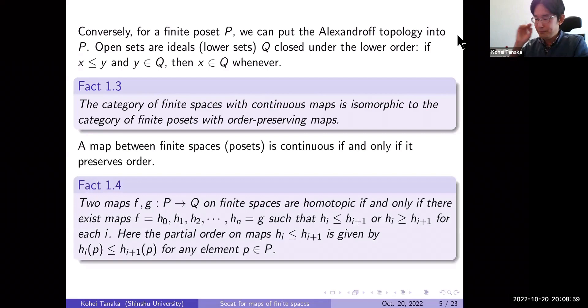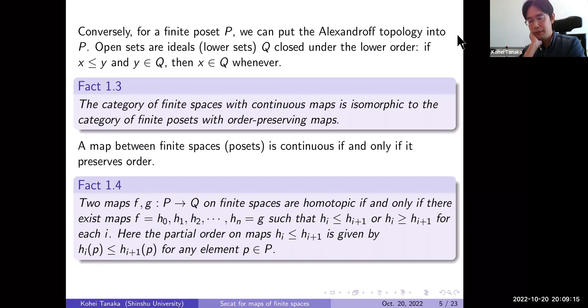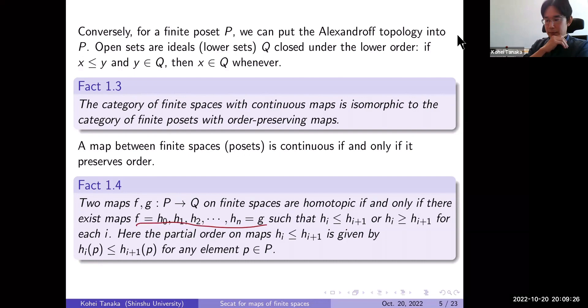Moreover, we can translate homotopy into the terms of poset maps. Two continuous maps on finite spaces — that is, order-preserving maps — are homotopic if and only if we have a finite sequence of maps connecting between these two maps.